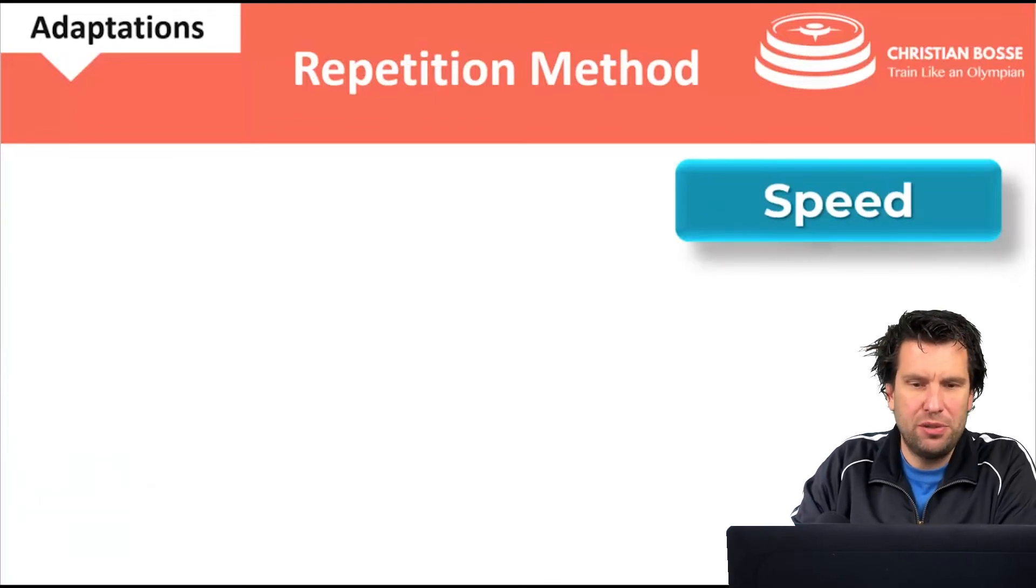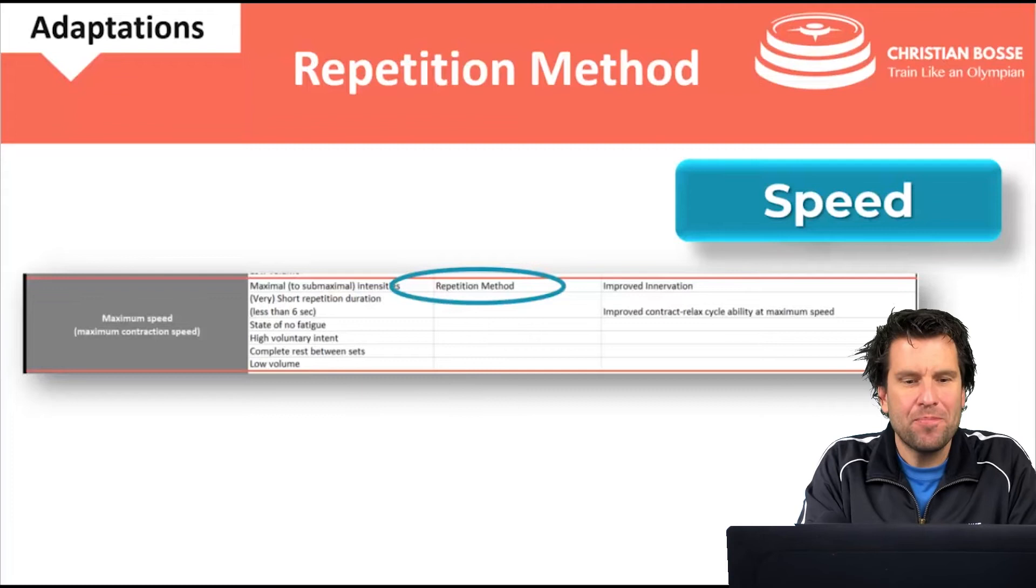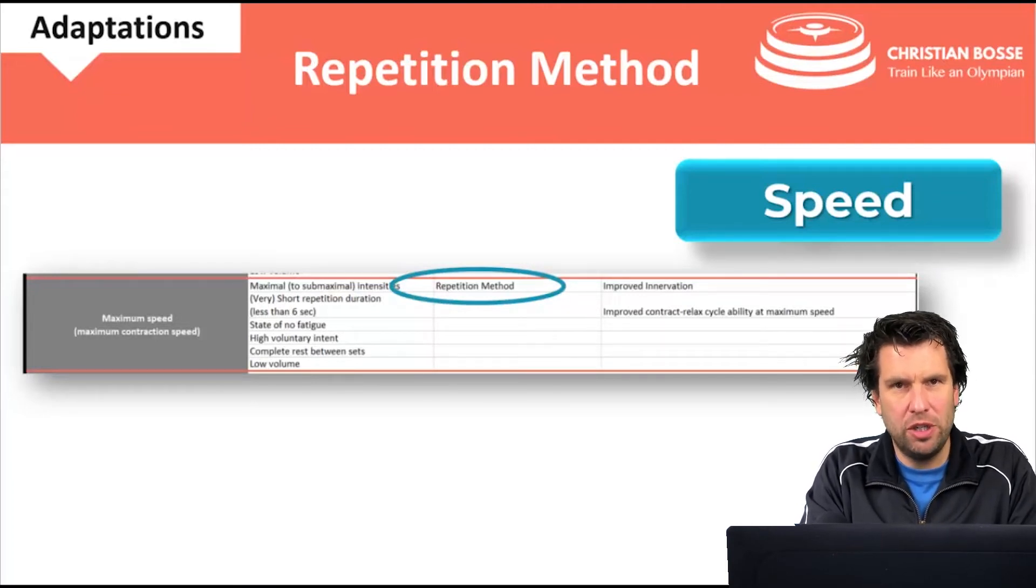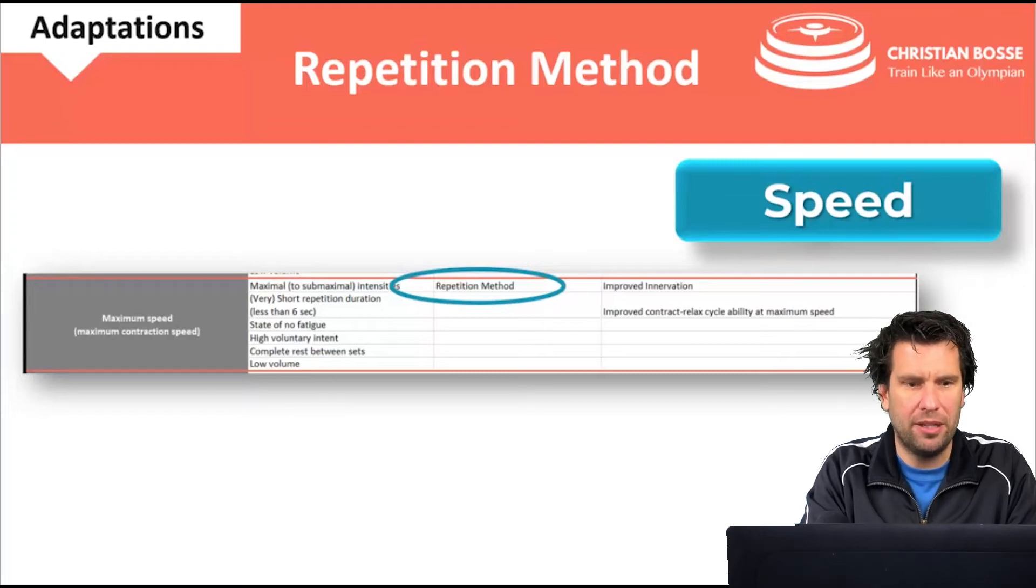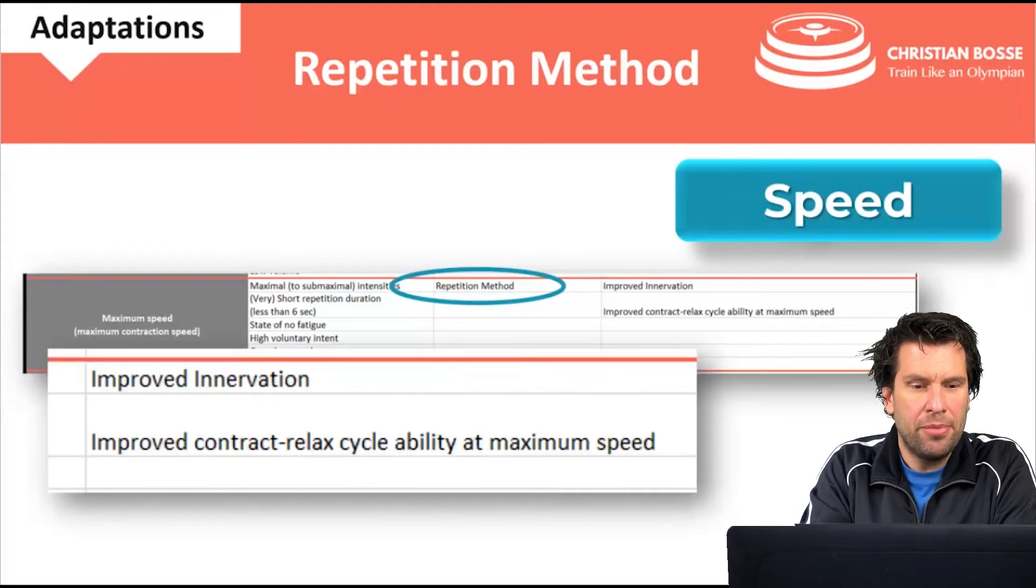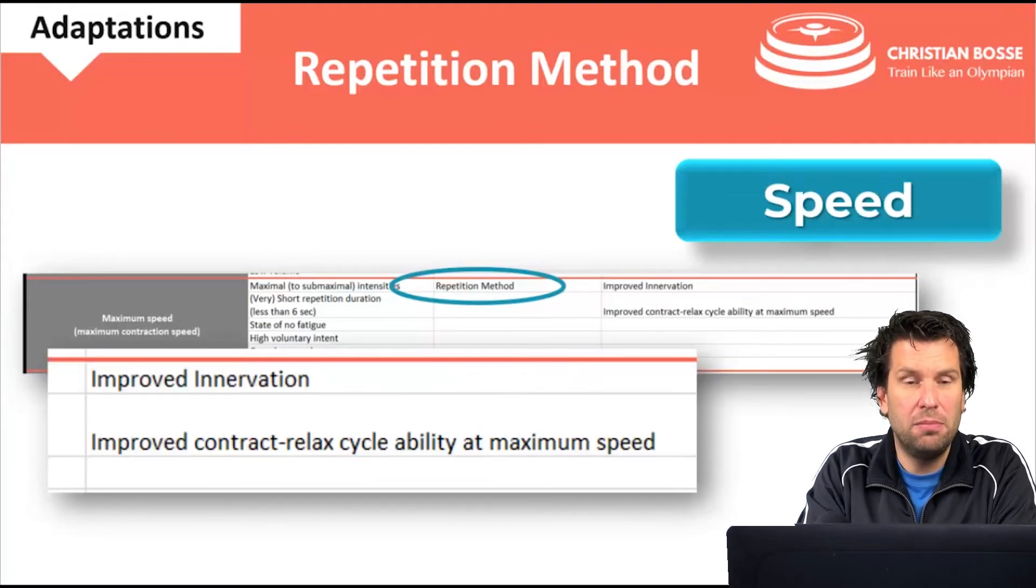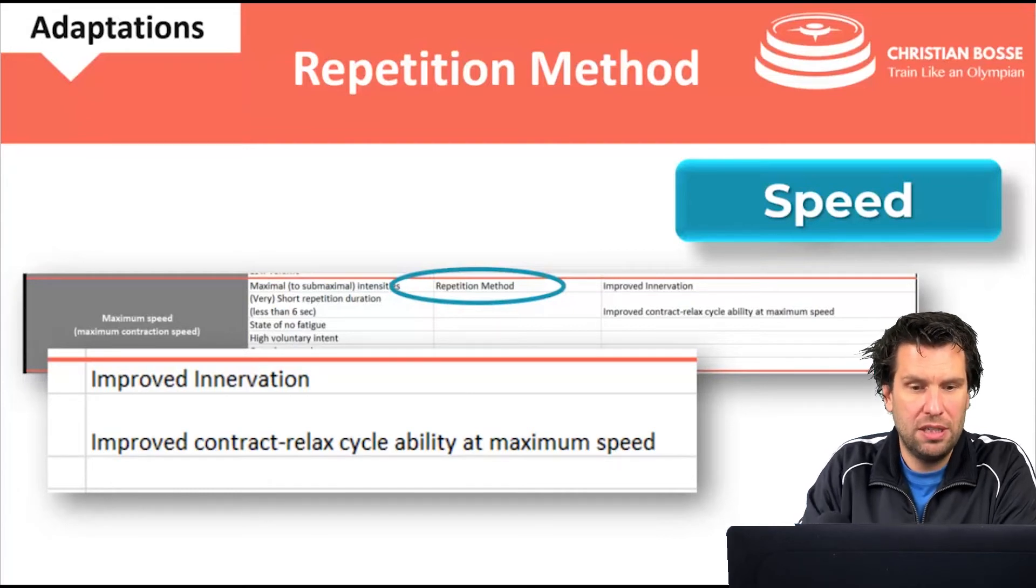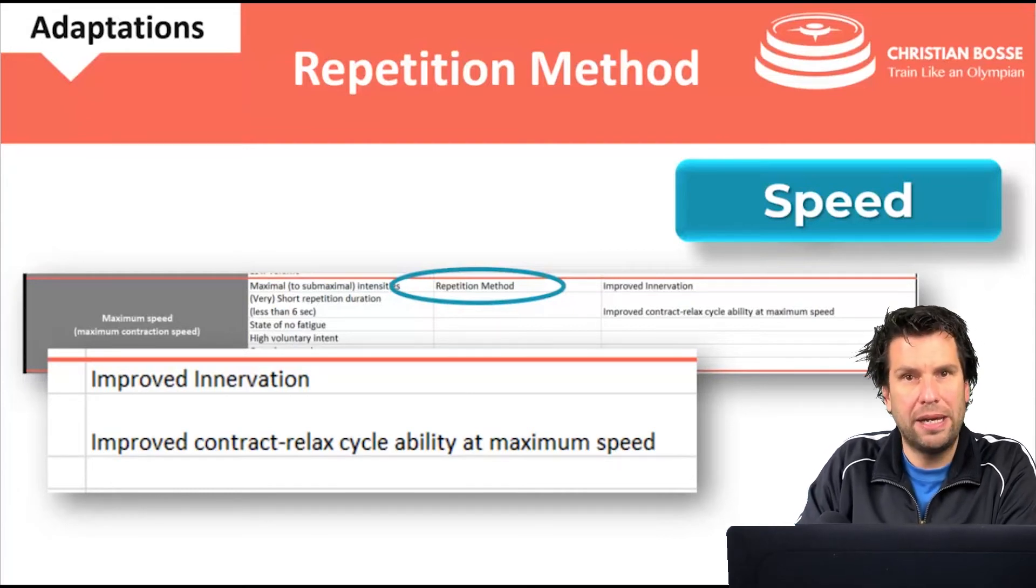For speed training, now we get into the details of speed training. Basically for speed training, most trainings you do use the repetition method. So here is one example, maximum speed. What are the adaptations? Improved innovation and an improved contract-relax cycle ability at maximum speed.